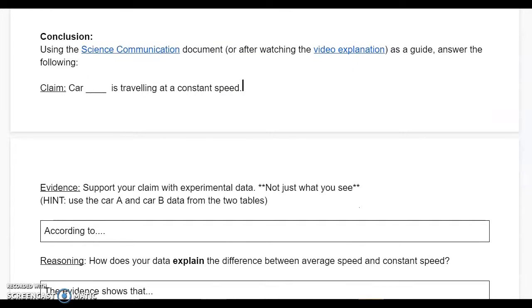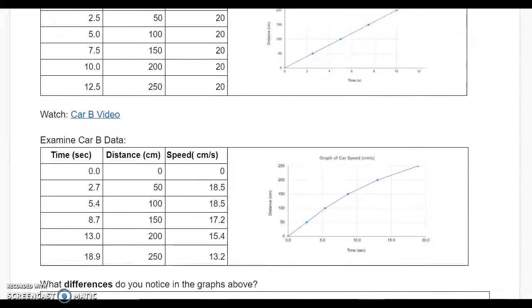Finally, you'll be writing what is called a CER. There is a video explanation posted here. I do encourage you to watch it. You'll be answering the question to come up with a claim: car blank is traveling at a constant speed. So basically, your choices for this would be car A or car B. You can base this on the videos as well as the data charts above.